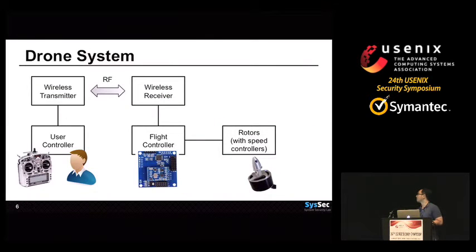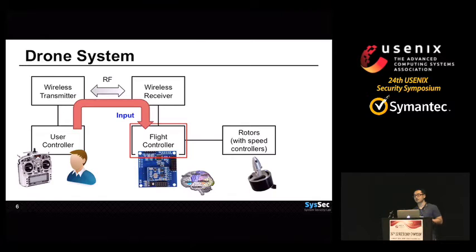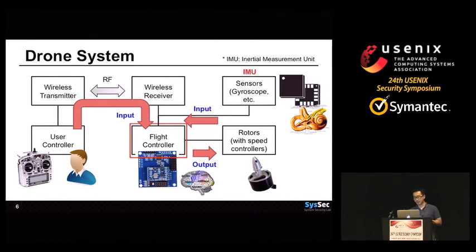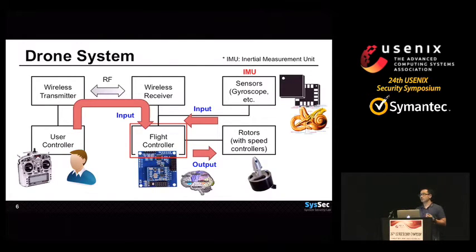This is a basic block diagram of a drone system. The most important part is the flight controller — this is the brain of the drone. A user transmits the control signal to the flight controller, and then the flight controller decides the speed of rotors. However, it is impossible for a human to control drones corresponding to every variation of environment. So to maintain the balance of the drone, an inertial measurement unit is required. Using two inputs from user and sensor, the flight controller can decide the control signal for all rotors.